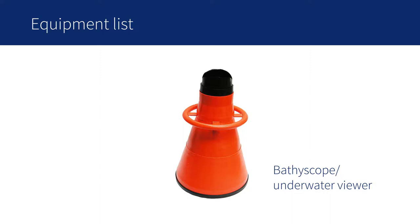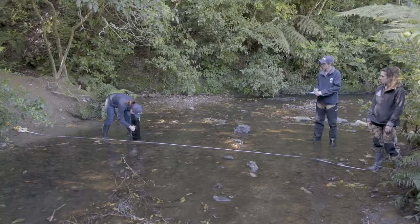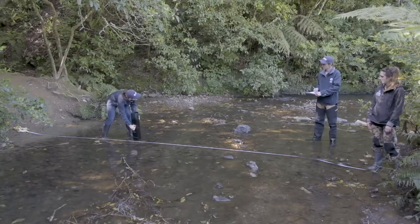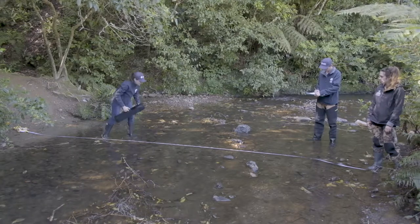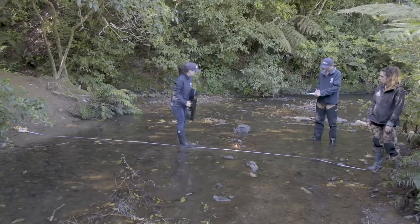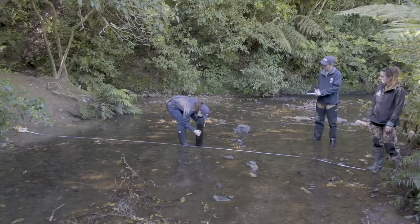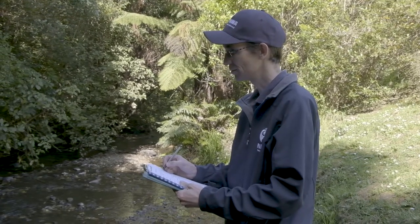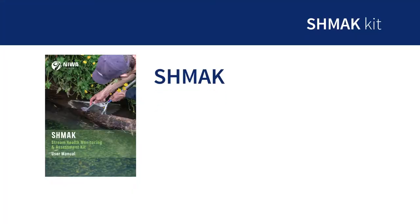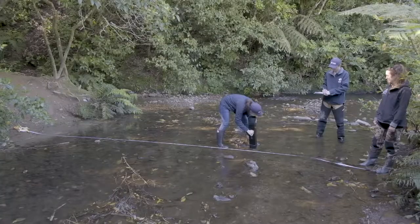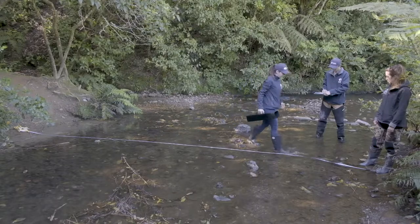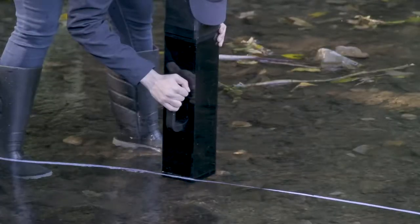It can be bought from a marine shop. Working from the downstream end of your site, move out to the first point. Put the viewer down in front of you, about 5-10cm underwater. Put your face tightly against the viewer. Record the percentage cover of the types of algae in your field of view to the nearest 5%. There are tips for this in your SHMAC manual. Try to place the viewer down at evenly spaced points along your cross section without looking at the stream bed first.